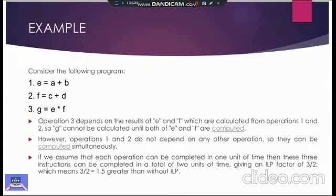If we assume that each operation can be completed in one unit of time, then these three instructions can be completed in a total of two units of time, giving an ILP factor of three by two. Three is indicating three numbers of instructions, and two is indicating two instances of time, which means three by two equals 1.5, greater than without ILP. Without ILP, this factor would be three by three. Three instructions will be calculated in three instances of time.